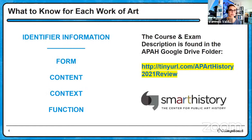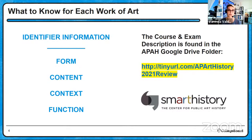Just a reminder that this is the info you need to know for each work: identifier information, form, content, context, and function. Those four are defined on the last page of the course and exam description in the Google Drive folder. Smart History has most of the information you need for works in your set. I highly encourage you to watch the AP daily videos and unit faculty lectures on AP Classroom for works or skills you feel you need to review, as those are designed to give you a leg up on the exam.